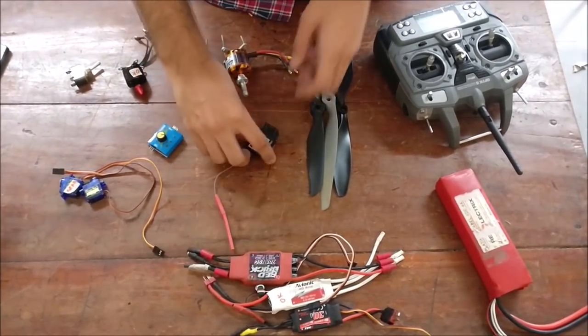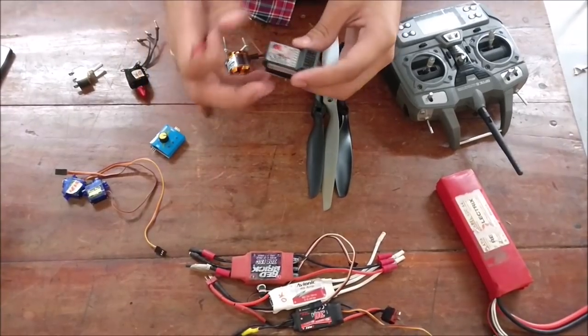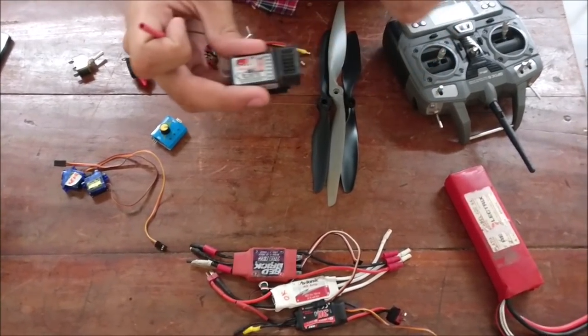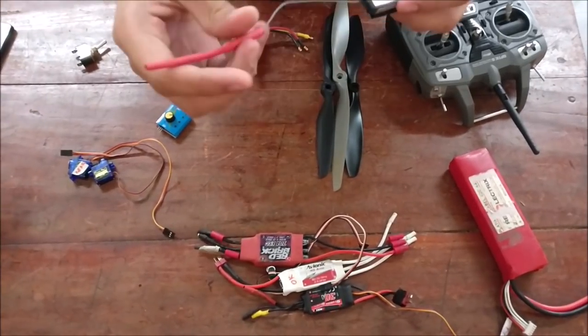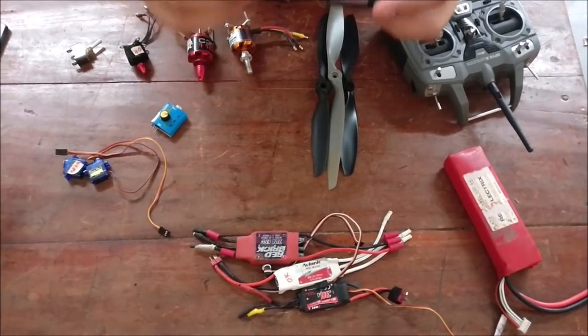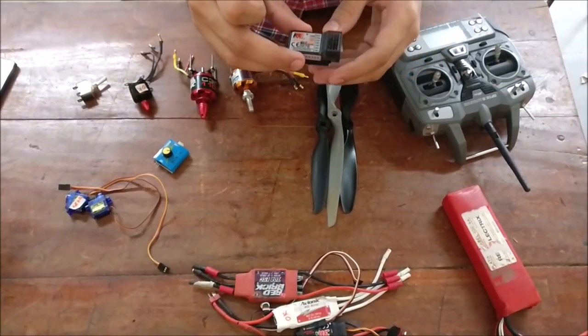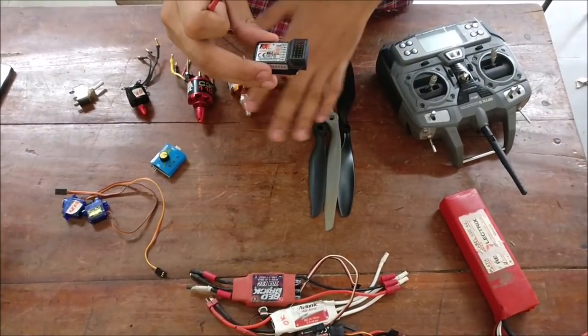Next coming on are the receivers having different channels and each channel is set for one particular function and this is the antenna of the receiver. It is a major component in our plane because the receiver connects electronically all of these components.